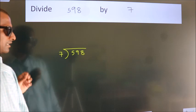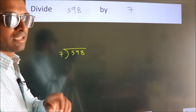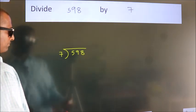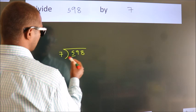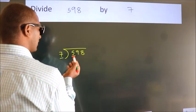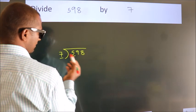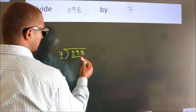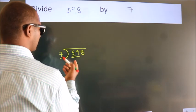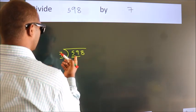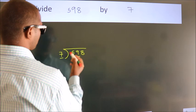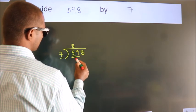This is your step 1. Next, here we have 5, here 7. 5 is smaller than 7, so we should take two numbers: 59. A number close to 59 in the 7 table is 7 times 8, which is 56.